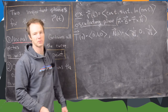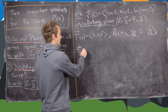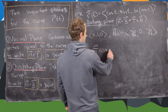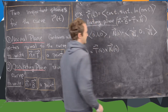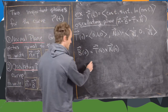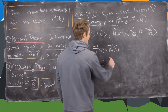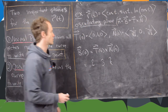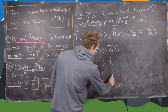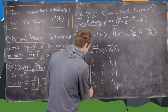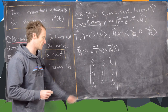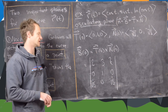We have our unit tangent vector and unit normal vector, so now we can find the unit binormal vector evaluated at 0, which is given by T(0) crossed with N(0). We use the 3×3 determinant version of the cross product, with i, j, k in the first row, then (0, 1, 0) in the second row, and (−1/√2, 0, −1/√2) in the third row. We could scale by root 2 since scaling doesn't change the direction of the binormal vector, but we'll leave the 1/√2 terms in for practice.